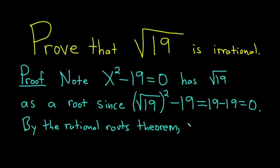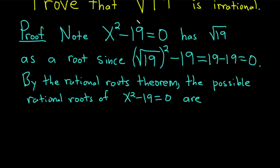the possible rational roots of x squared minus 19 equals zero are, the factors of this constant term divided by the factors of the leading coefficient. They would be factors of negative 19 over the factors of 1.